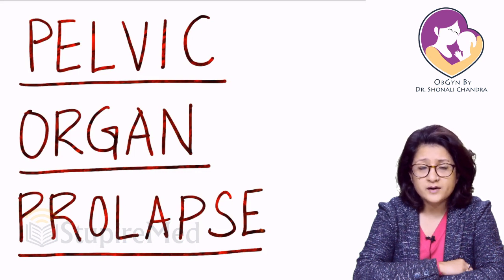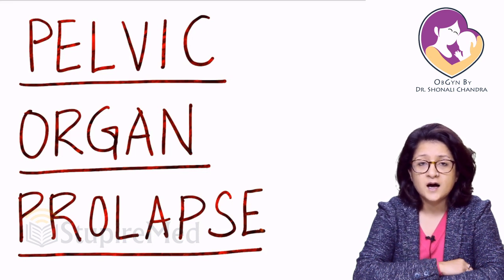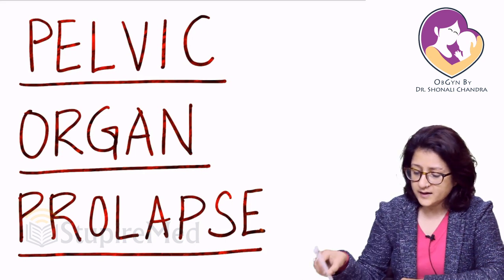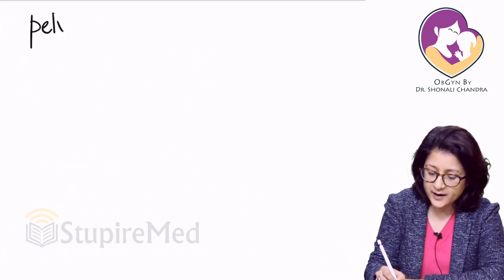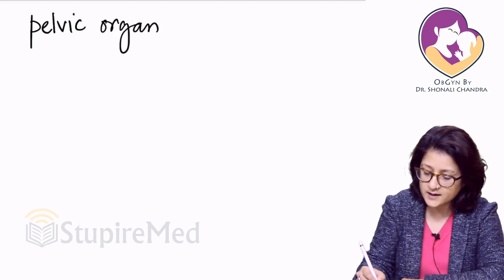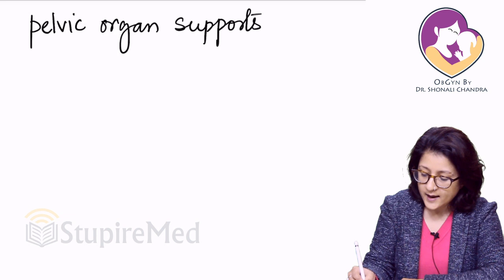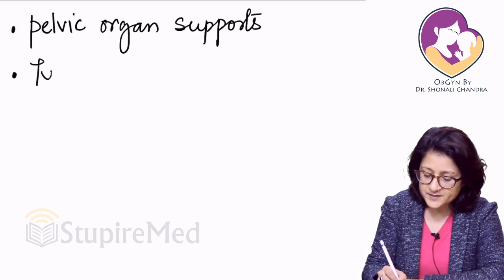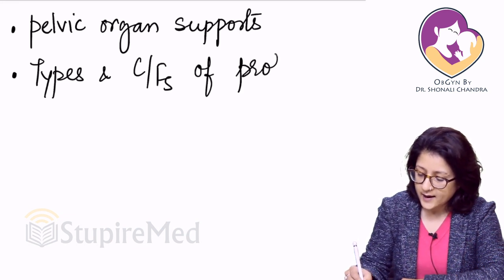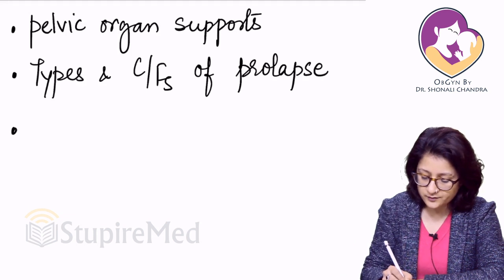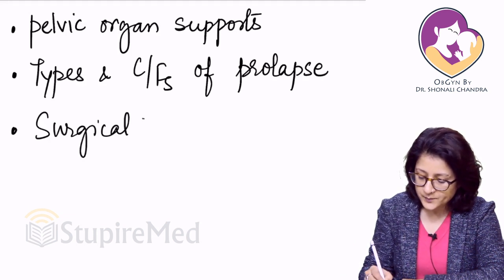However, it is very important to understand the anatomy and the physiology — the causes behind prolapse — to understand what kind of surgery fits what particular case. So I'm going to focus mainly on pelvic organ supports first, then the various types and clinical features of prolapse, and after that the various surgical treatments.